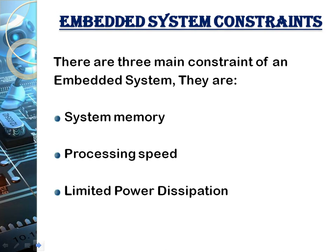Any embedded system must have system memory so that it can store the code and all other data. Every system must also have a particular processing speed on which it is operating, and that speed is defined by the crystal oscillator which is placed in the system.